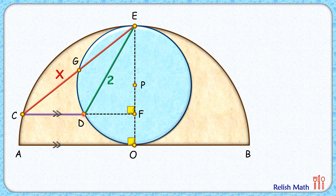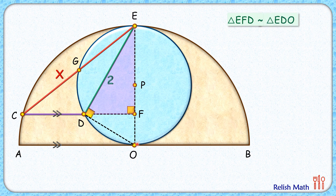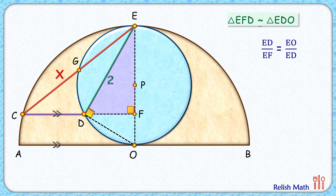Let's join DO. Angle D is an angle subtended by the diameter of the blue circle, and by theorem it will be 90 degrees. Now looking at triangle EFD and triangle EDO: both have angle E common and both have a 90-degree angle, so by angle-angle similarity both triangles are similar. Since the triangles are similar, the ratio of corresponding sides will be equal: ED upon EF equals EO upon ED.